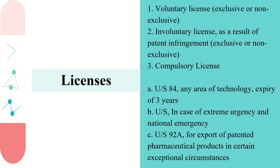An involuntary license is usually granted by the patent holder to a company under specific circumstances where the company infringes the patent rights of the patent holder and wants to continue using the patented invention. This kind of license is granted only when there is a likelihood of the patent holder filing a lawsuit against the company for patent infringement, and in order to avoid this, the company may take a license or permission to use from the patent holder. A compulsory license is granted by the government under very specific circumstances.